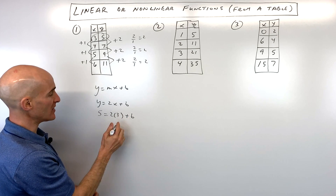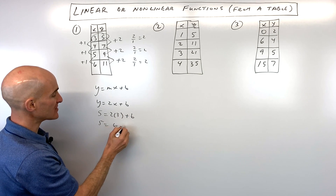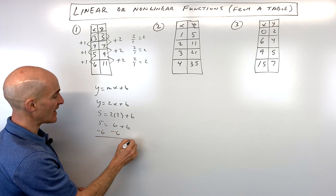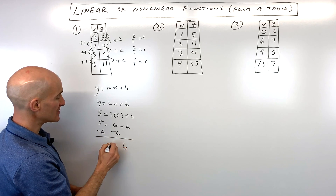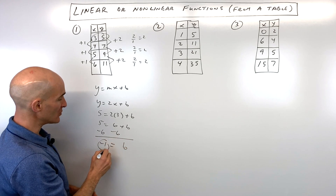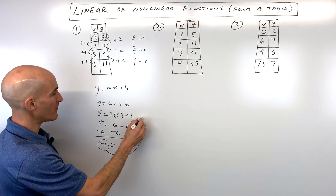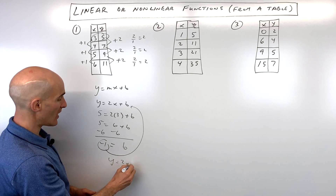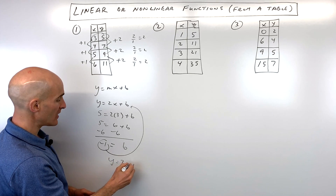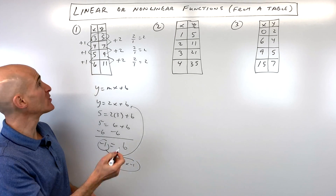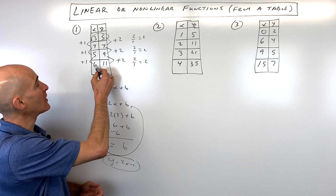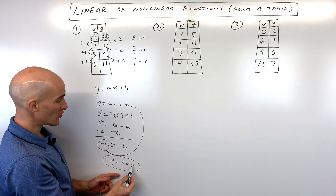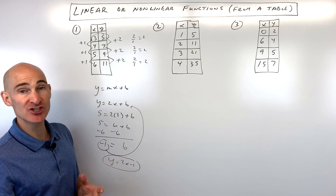We can pick one of the coordinates — say, three comma five. So when y is five and x is three, we can solve for b. We get five equals six plus b, so subtracting six from both sides gives b equals negative one. Putting that back in, the equation is y equals two x minus one. To check, if x is six: two times six is twelve, minus one is eleven — it checks out.